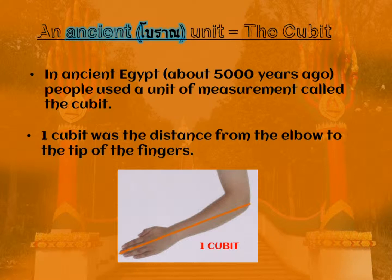It's fairly easy — you always have the cubit with you. They also had other units of measurement based on the finger and the width of the hand. These are the first units of measurement used by humans.